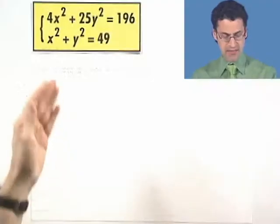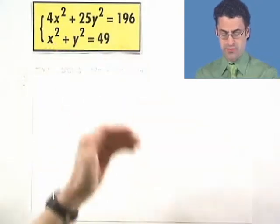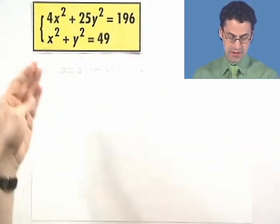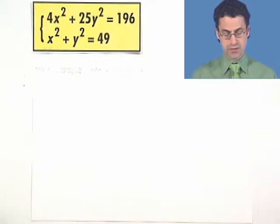Look at this system. I've got 4x squared plus 25y squared equals 196, and I want to solve that simultaneously with x squared plus y squared equals 49.